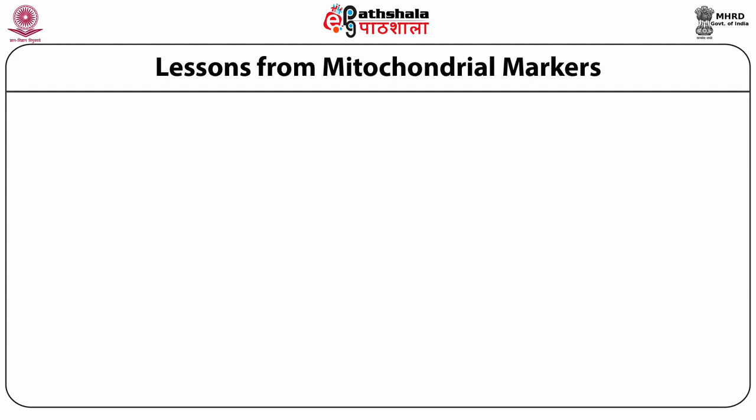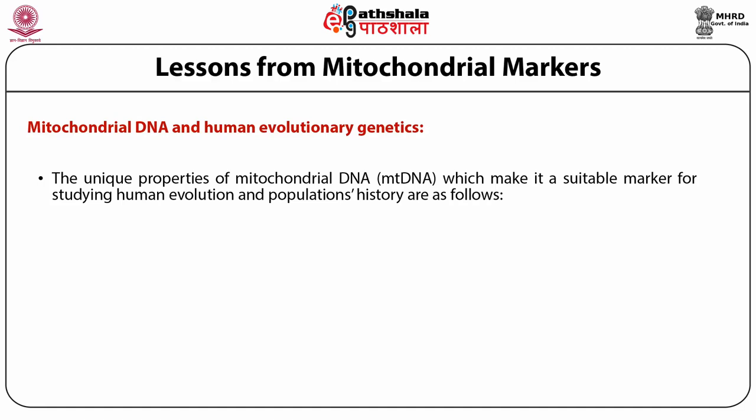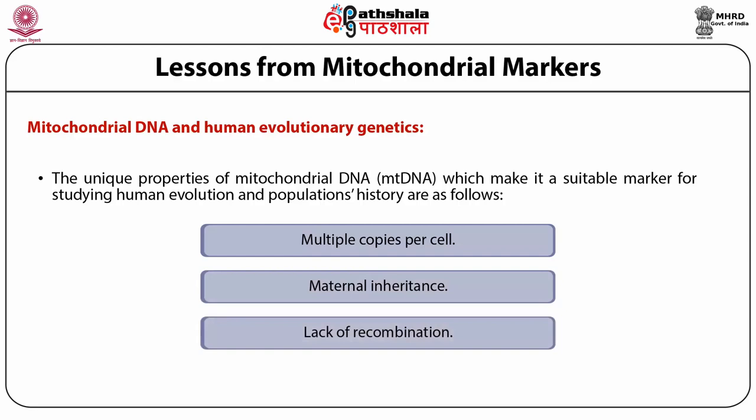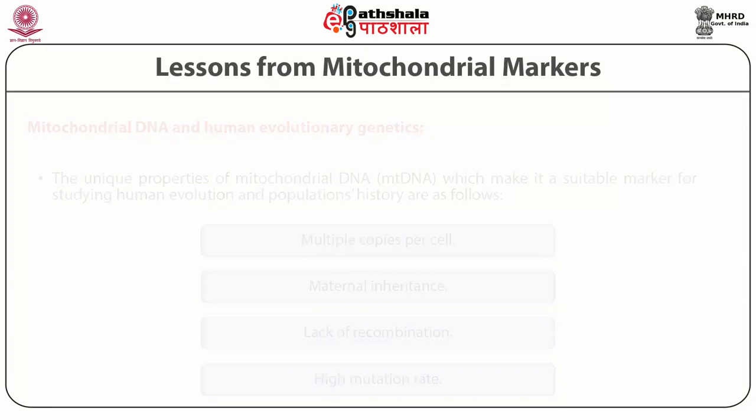Lessons from mitochondrial markers: Mitochondrial DNA and human evolutionary genetics. The unique properties of mitochondrial DNA that make it a suitable marker for studying human evolution and population history are: multiple copies per cell, maternal inheritance, lack of recombination, and high mutation rate.